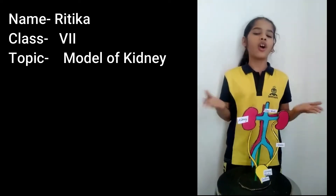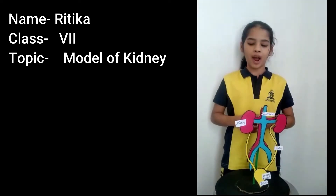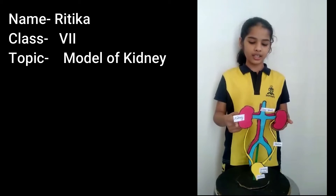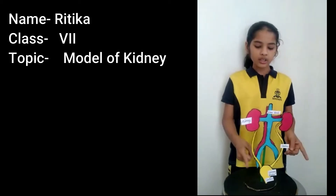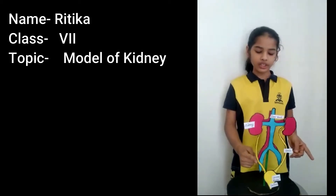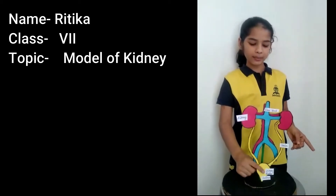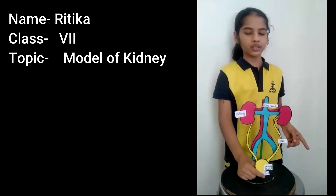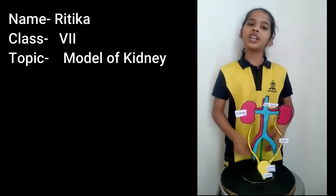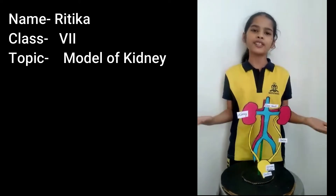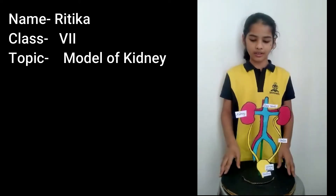The organs of an excretory system are kidneys, ureter, urinary bladder, and urethra. So let us briefly discuss about these organs.